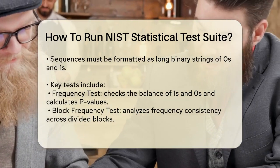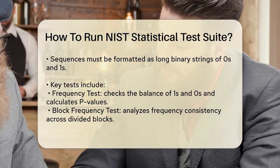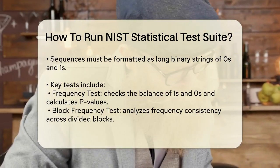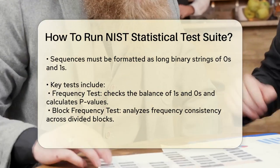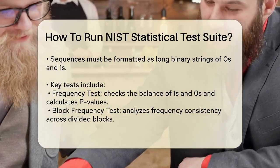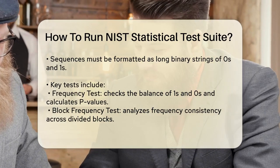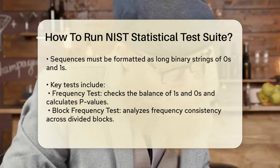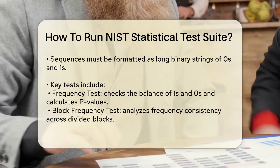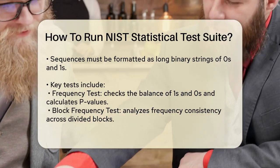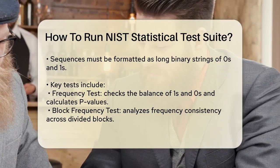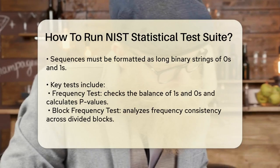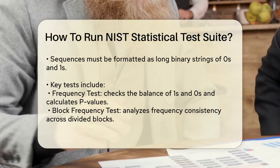The NIST Suite includes tests like the Frequency Test, Block Frequency Test, Runs Test, and many others. The Frequency Test checks if the number of ones and zeros in the sequence is approximately equal — you calculate the p-value, which indicates how likely it is to observe the given frequency if the sequence were truly random. The Block Frequency Test divides the sequence into blocks and checks the frequency of ones in each block, ensuring consistency across all blocks. The Runs Test looks at the number of consecutive ones or zeros and checks if the runs are of the expected length for a random sequence.